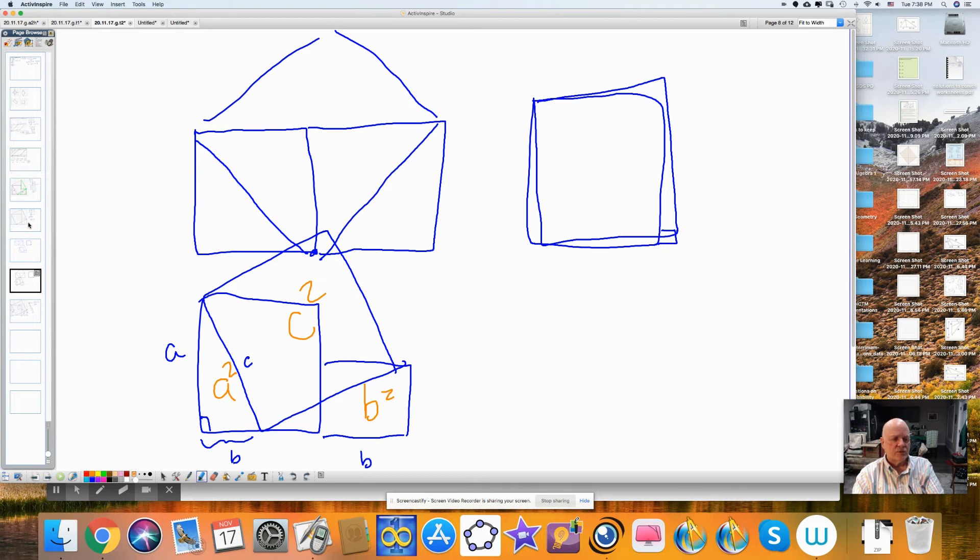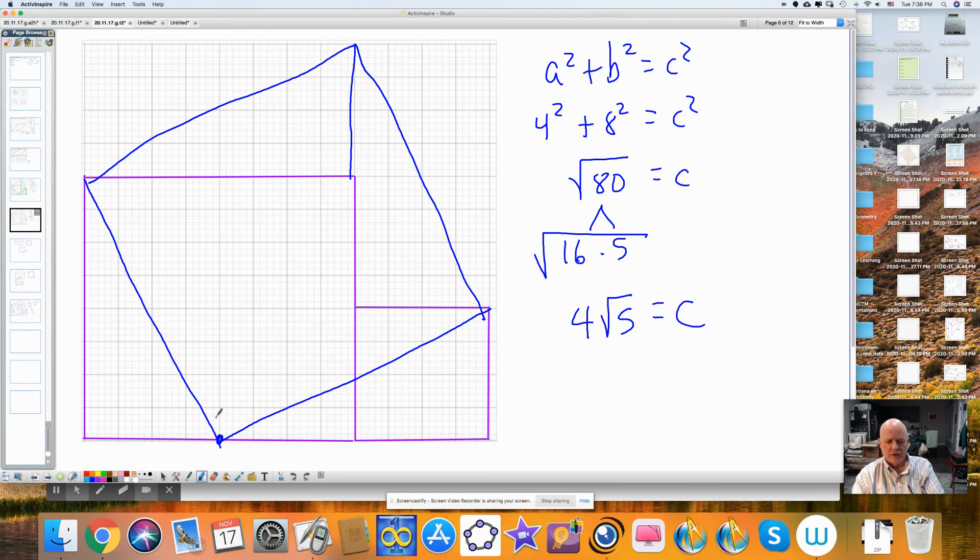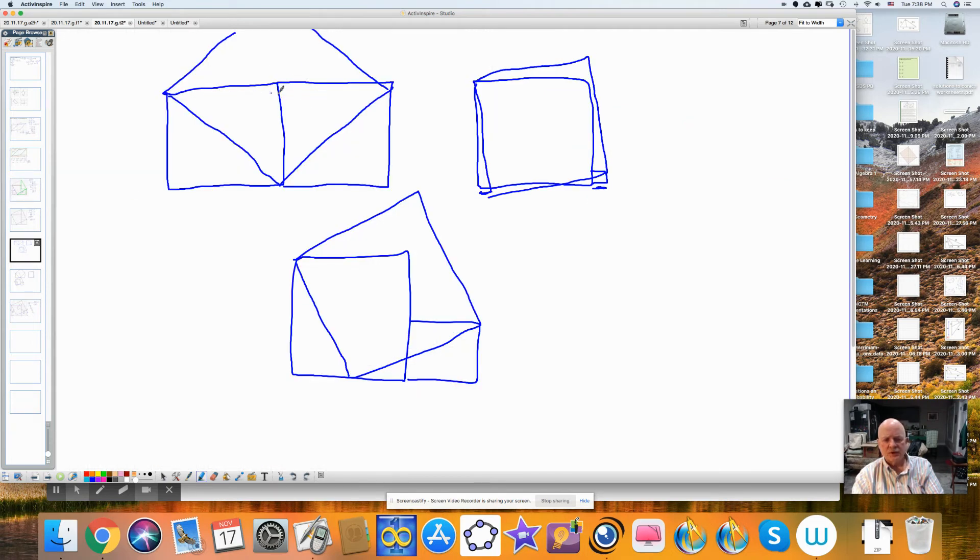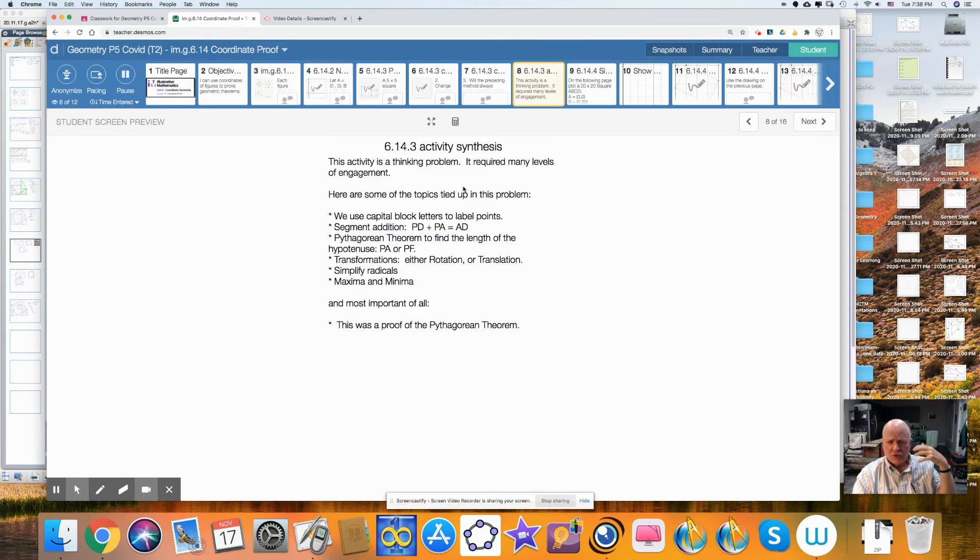That was done using coordinate geometry. Now let's look at all the things that we've learned from this experience. We learned that we used capital block letters for naming points. We learned segment addition. 3 + 2 = 5, or 2 + 3 = 5. We learned that we can use the Pythagorean theorem to find the length of the side. And here we actually simplified the square root of 80. We also learned that we can do a rotation or a translation. So we can use transformations with this. We learned of maxima and minima. If we maximize it, we get this. If we minimize it, we get this. So that we can actually do this in our proof. All of this is tied up into one problem. It's a problem because you had to think about it. You can't just watch it and see it done and just look at it and know how to do it. You have to actually think about it as you were doing it. The most important thing was this was a proof of the Pythagorean theorem.